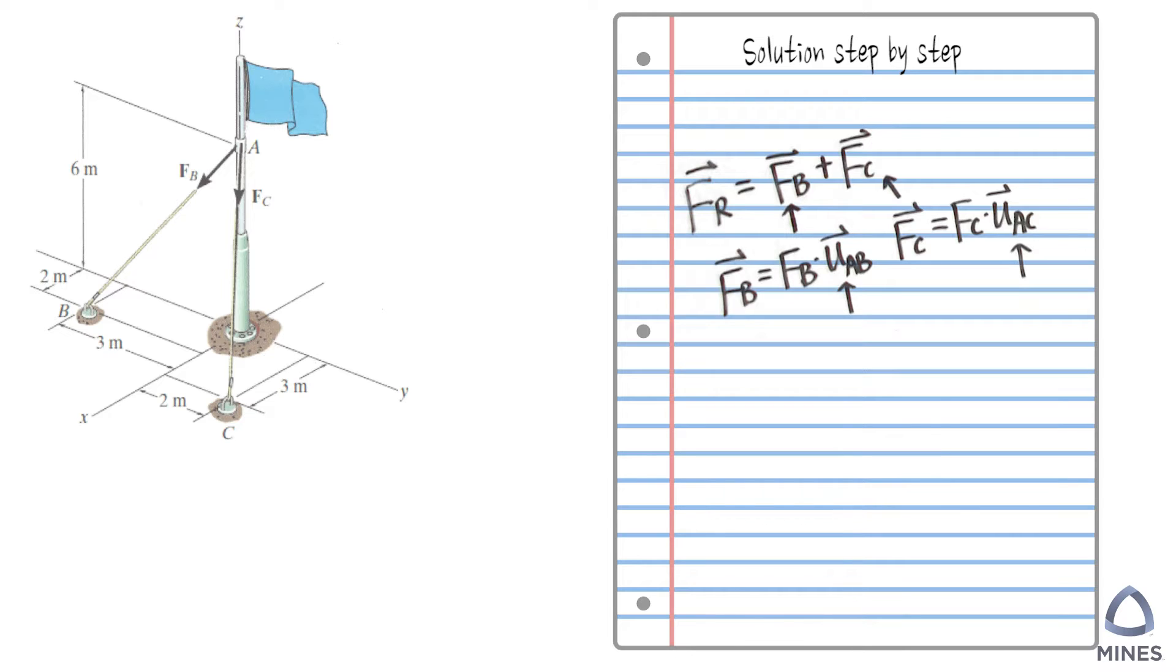So now, how are we going to write the unit vector from A to B? What we have to gather is the information of location A and B. The same thing here, location A and C. Which means in order to solve this problem and find out the total resultant force, we have to firstly gather the information of each location here on the picture.